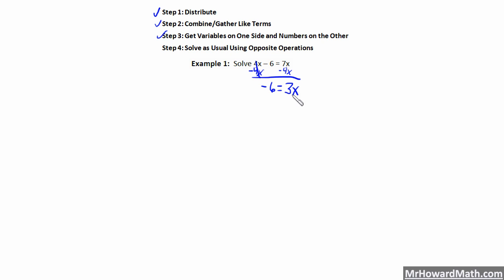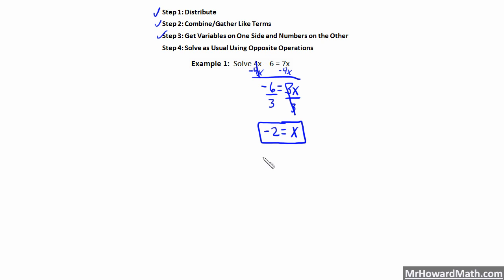Now I solve as usual using opposite operations. I have 3x, meaning 3 times x. The opposite of times is to divide, so I divide both sides by 3. These cancel, leaving me with 1x, which we write as just x. Negative 6 divided by 3 is negative 2. So my answer is negative 2. On example 2 we're going to use the same problem but work it a different way — you'll still get the right answer, but example 1's method is a little easier.